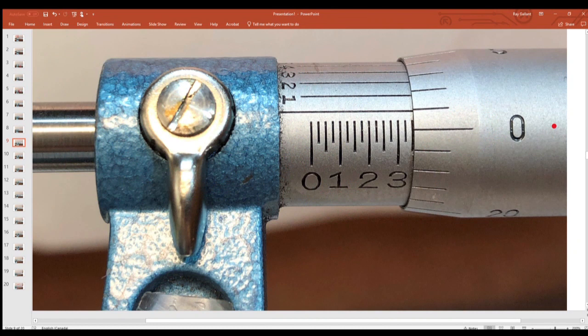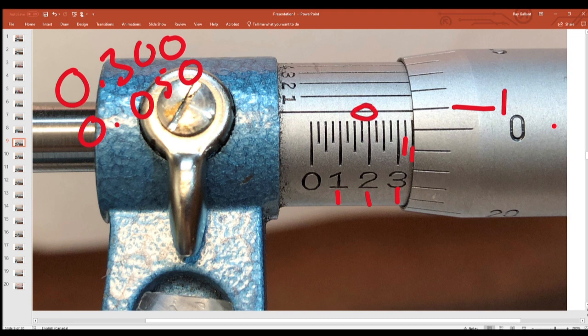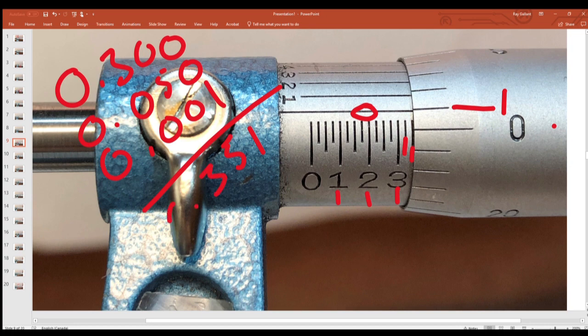Let's take a look at what we have. We got 1, 2, and 3. So 0.300. We have 25, we have 50. 0.050. And this one here is our zero line. This one lines up with the zero line. So 0.001. And we come up with 1530, so 351 thou.